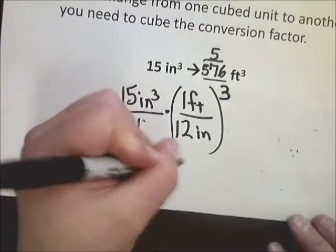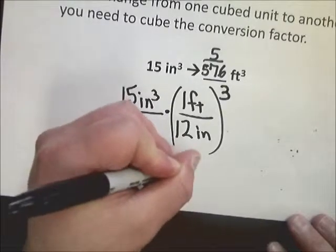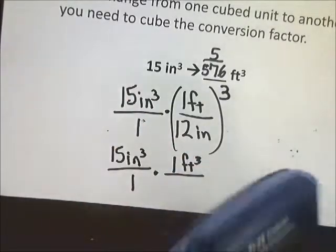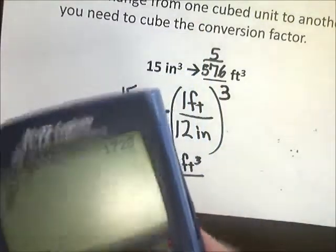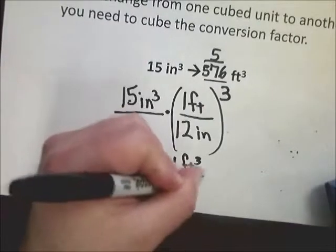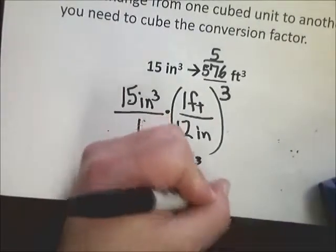What that changes this into is 15 inches to the third over 1 stays the same. Then I do 1 foot to the third power, because 1 to the third power is 1. Then I need to do 12 to the third power, and you get 1728 inches to the third power.